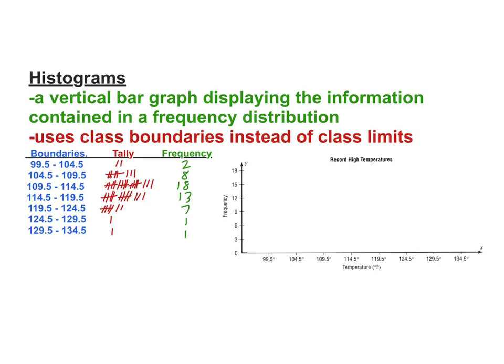There are a couple reasons why we use the boundaries. When we create a histogram, the bars should actually touch each other. The reason we use the boundaries to make that happen is we have overlap — this first row ends at 104.5, the second one starts at 104.5. So that's why this bar is going to touch that bar. I'm going to have a bar for each row.